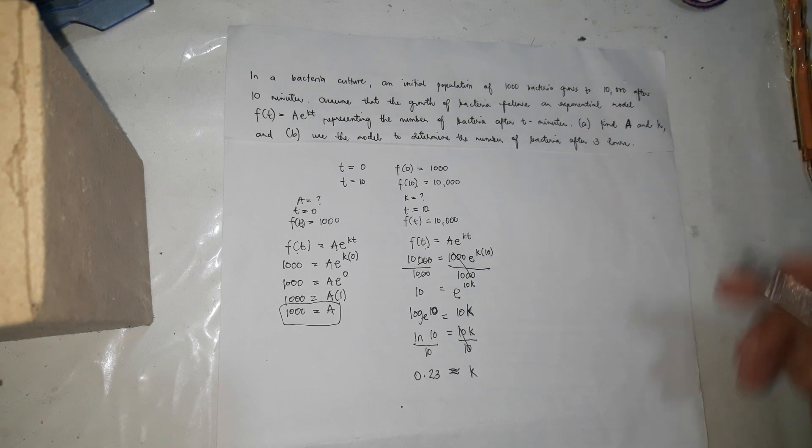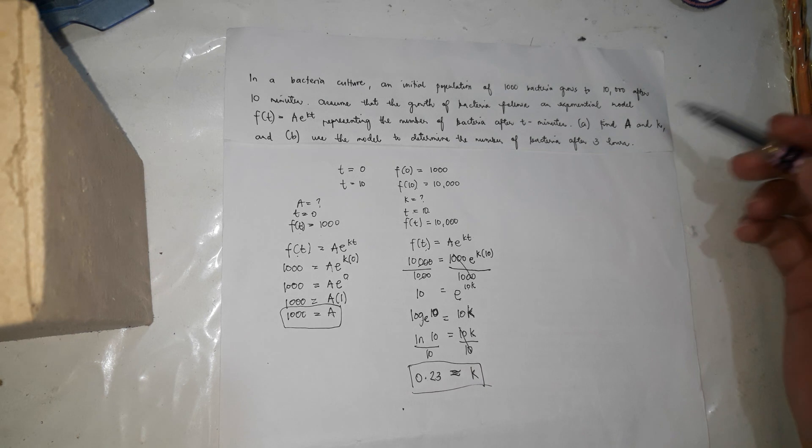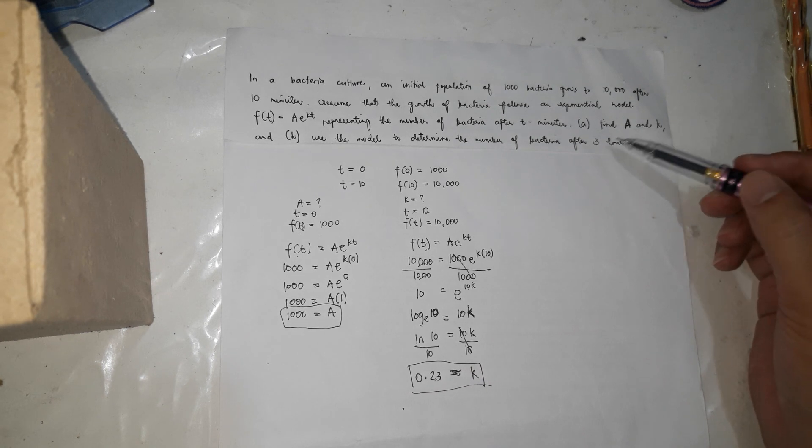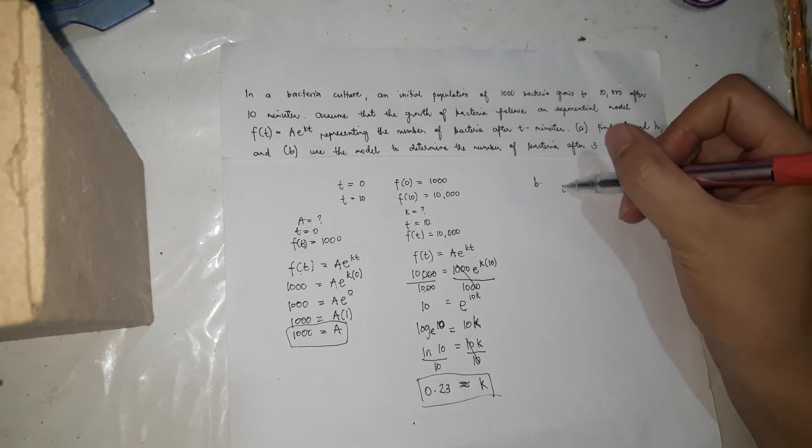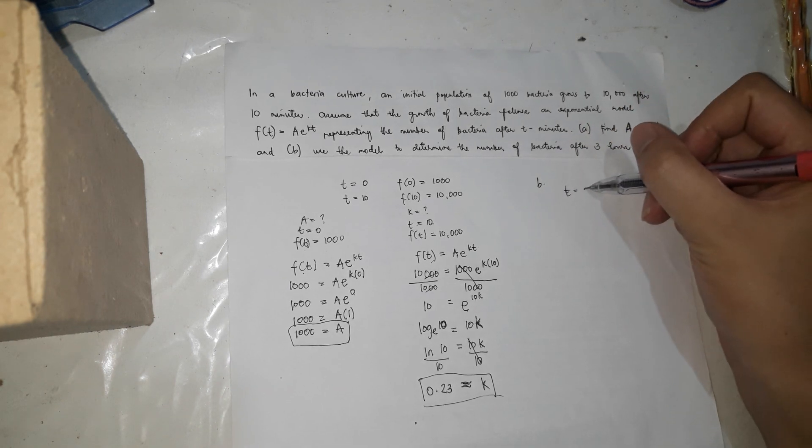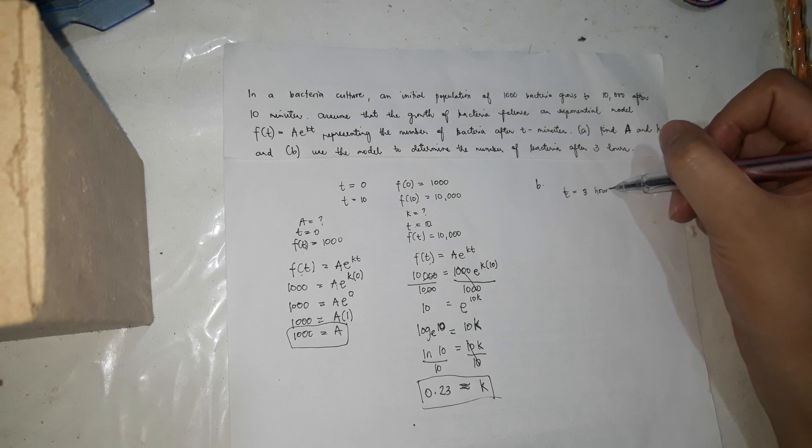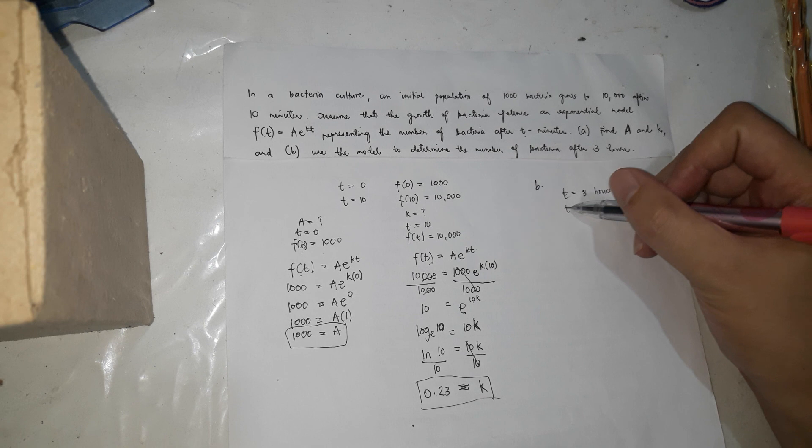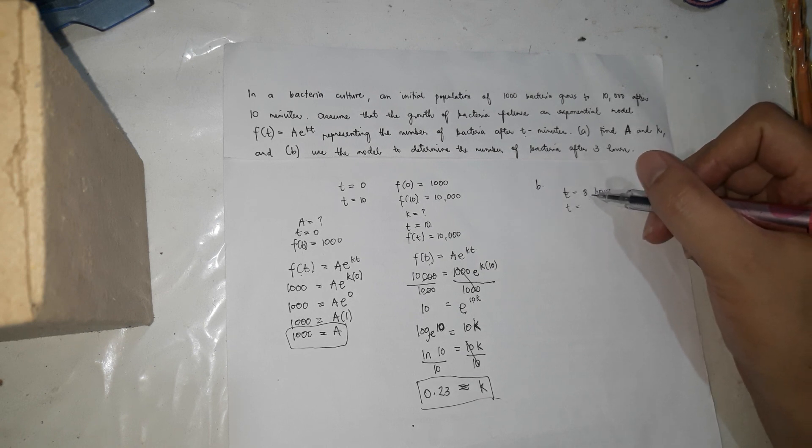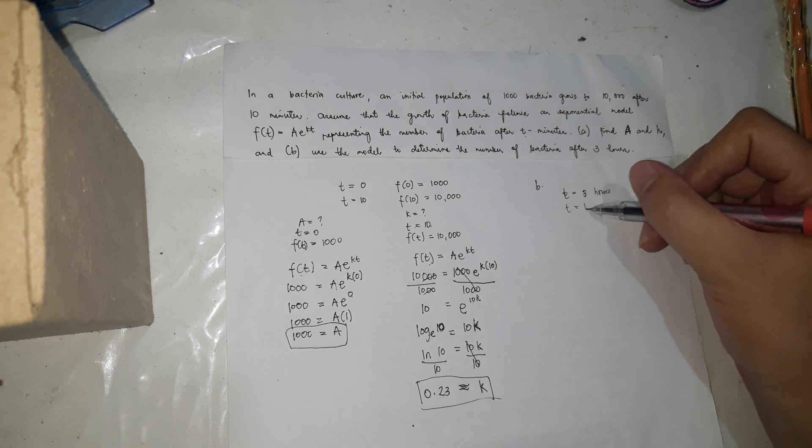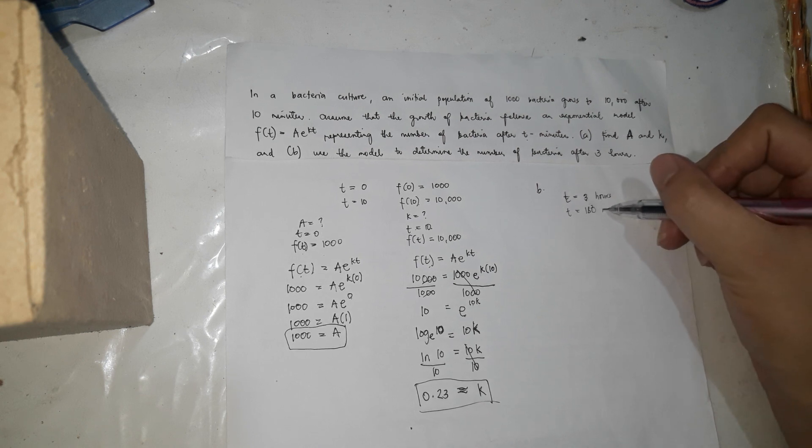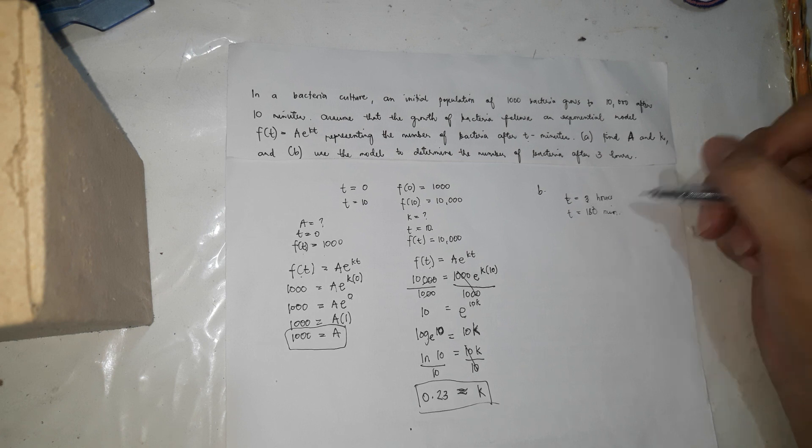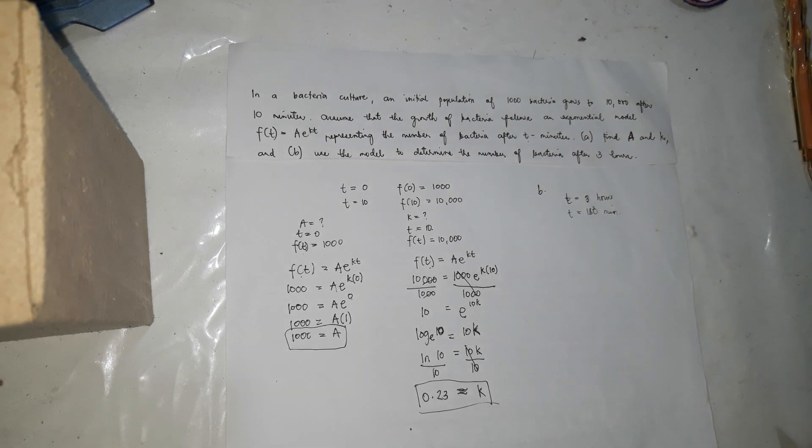So now we have the a, we have the k. So we answered already letter A. So we'll proceed with letter B. Letter B is t equals 3 hours, which is, however, t is for minutes. So t, 3 hours, we'll make it minutes. So 3 hours is 3 times 60, that's 180 minutes. So 180 minutes.